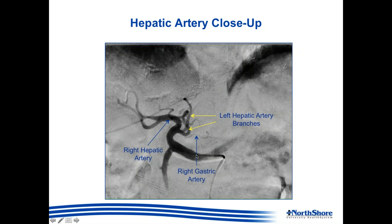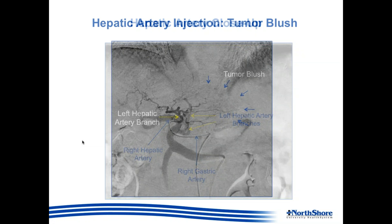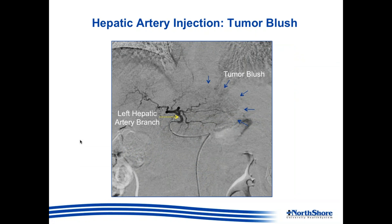Zooming in for a better close-up image — this is the common hepatic artery, the gastroduodenal artery. We can see the hepatic artery proper dividing into the right hepatic artery, and towards the left we see the left hepatic artery, which shows a very early bifurcation. As such, there are two branches of the left hepatic artery that start off very proximately. What you can vaguely see here is the right gastric artery, which appears to be coming off one of the branches of the left hepatic artery. This anatomy will become very important in the upcoming slides.